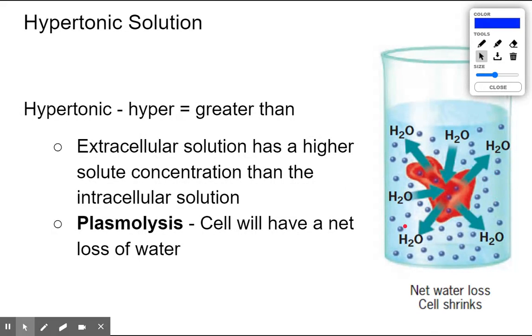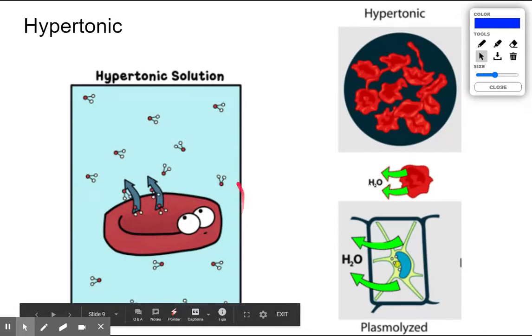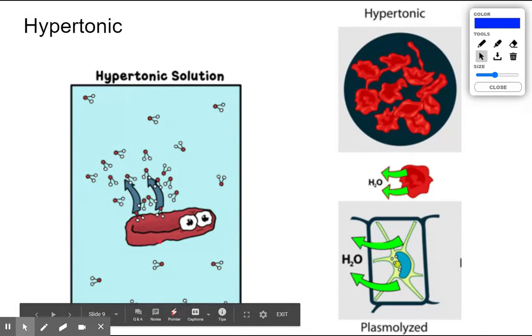When the solution surrounding the cell is hypertonic, water moves out through a process called plasmolysis. Here we can see that taking place. The cell actually physically shrinks when the water leaves it. The solution again is a hypertonic solution and water is leaving.